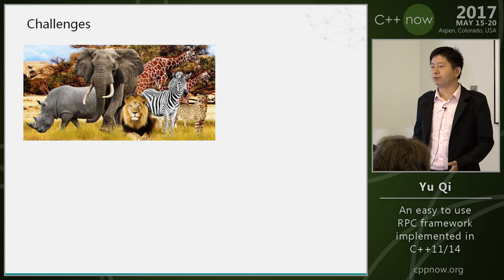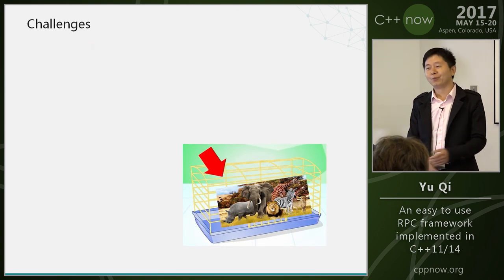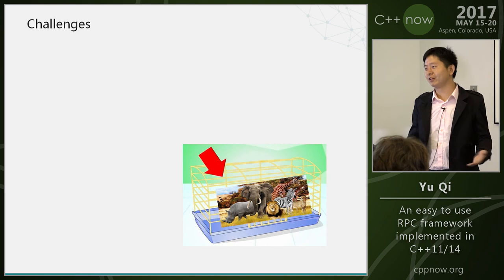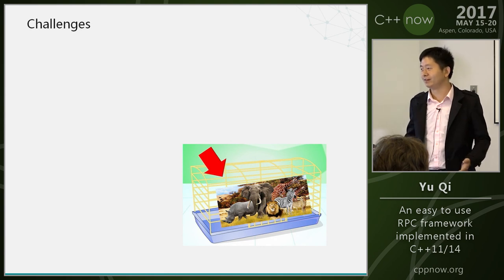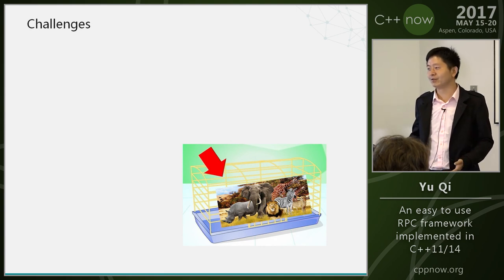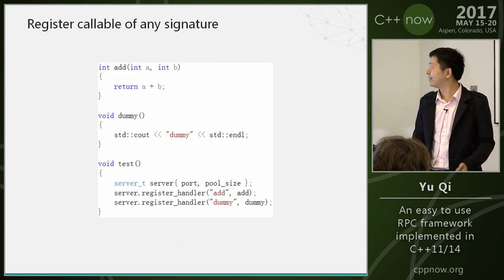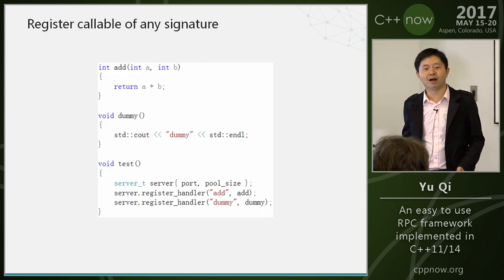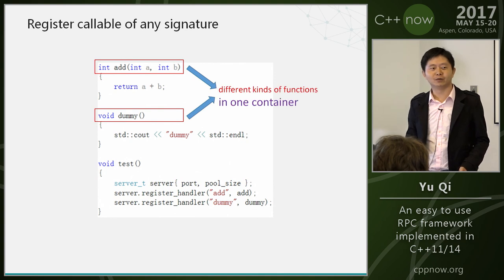Here is what I want to do: I want to put different kinds of animals in one cage and make them live together happily. Similarly, I want to put different kinds of functions in one container.